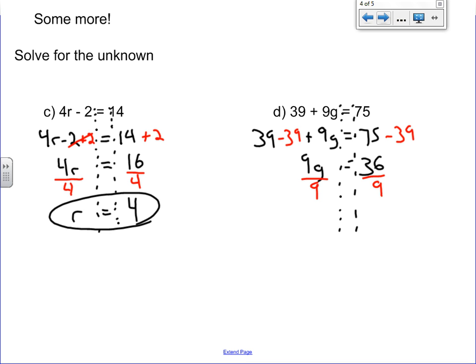But 9 divided by 9 is 1 times g is just g, and then 36 divided by 9 is 4. So we get our answer of 4. Kind of cool I would pick the same numbers there too.